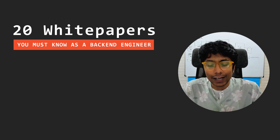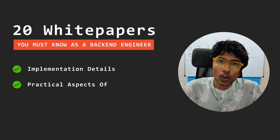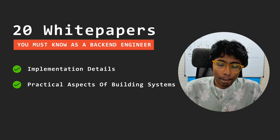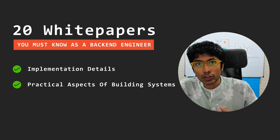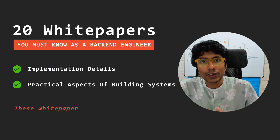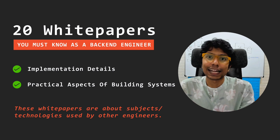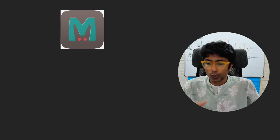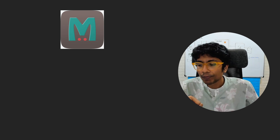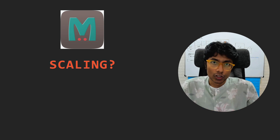The benefit of reading a white paper is that you get to know the implementation details and the practical aspects of building systems. Most of the trade-offs chosen when building a system come from the product requirements. In the case of these white papers, the product requirements are being decided by other engineers who will be using that system. For example, you have the system at Meta which is called Memcached — it's an open source software which Facebook has modified for their own use.